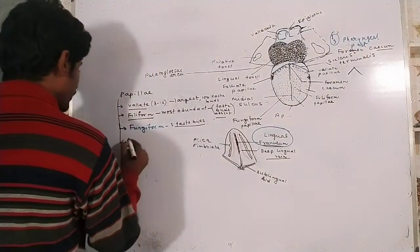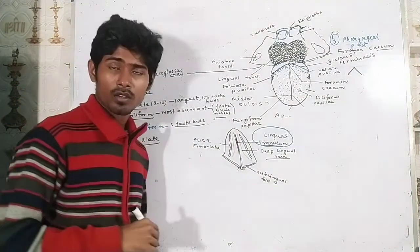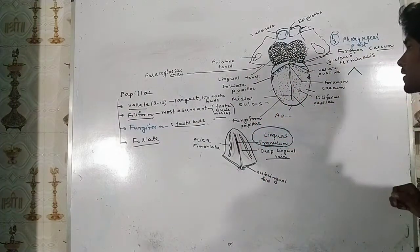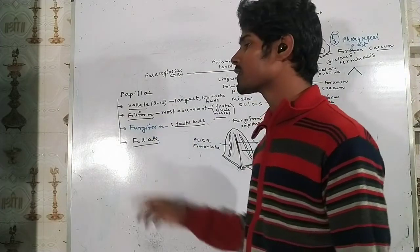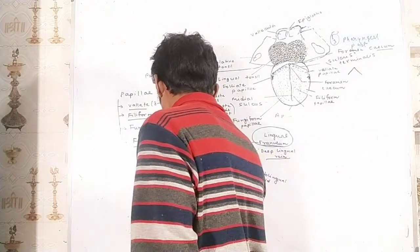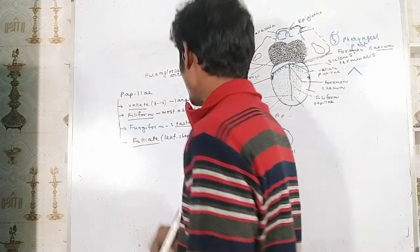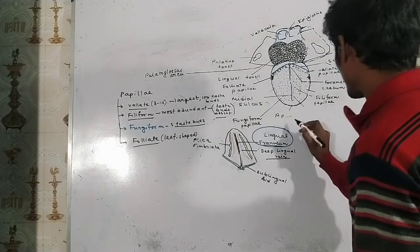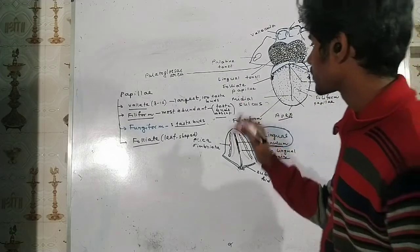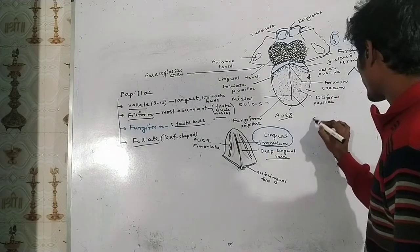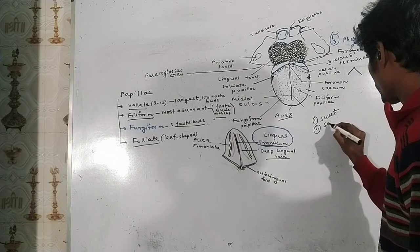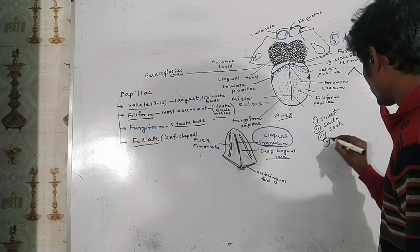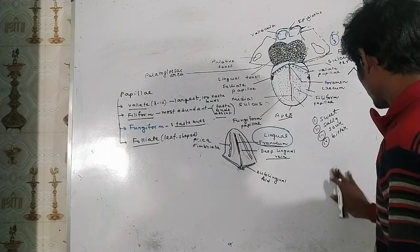Another type is the foliate papillae, which are present just in front of the circumvallate papillae and the sulcus terminalis. They are leaf-shaped papillae — 'foliate' means leaf. The various tastes we can perceive due to the different types of taste buds on the dorsal surface of the tongue include sweet, salty, sour, and bitter.